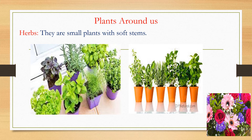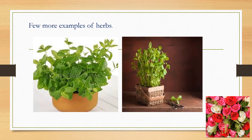For example, coriander and mint are used in cooking. In this picture, you can see a few more examples of herbs. They have soft stems and we can pluck them out easily.